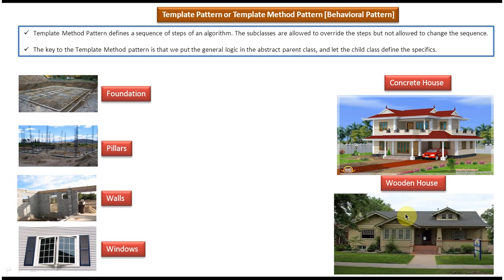Suppose I want to build a wooden house. I have to follow the same procedure which I followed for the concrete house. First I have to build a foundation, then I have to build pillars, then I have to build walls, then I have to build windows. The only difference is that instead of concrete, I have to use wooden materials to build a wooden house.